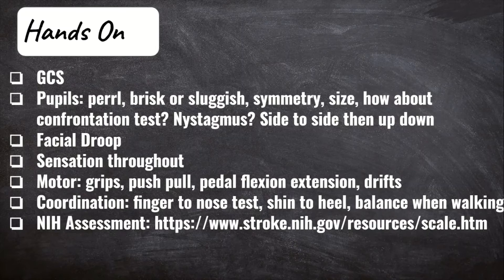Then I'll test for sensation on both sides of the face, asking if it feels the same, or if one side is a little less, or if there's tingling or numbness present. I'll move down to the arms, asking them to squeeze my fingers at the same time, noting if the strength is equal. I'll also have them push me away, then pull me towards them — again looking for equal strength on both sides. To assess for a drift, I have them close their eyes, lift their arms with the palms up, and I count to 10 out loud, noting for a drift.